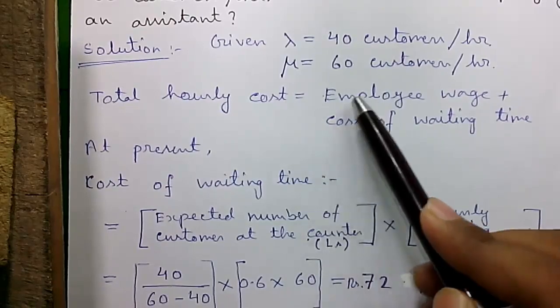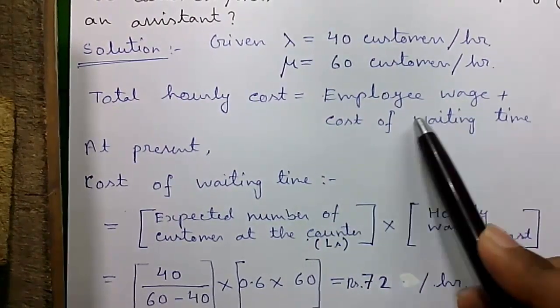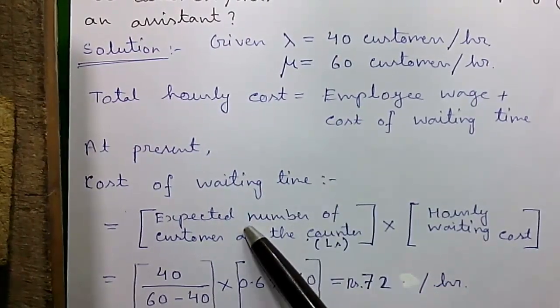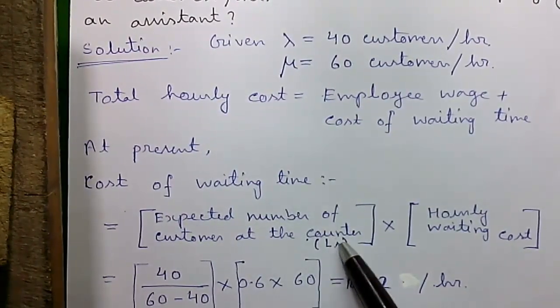So the total hourly cost is given by employee wage plus cost of waiting time. At present the cost of waiting time equals expected number of customers in the counter times hourly waiting cost per customer.